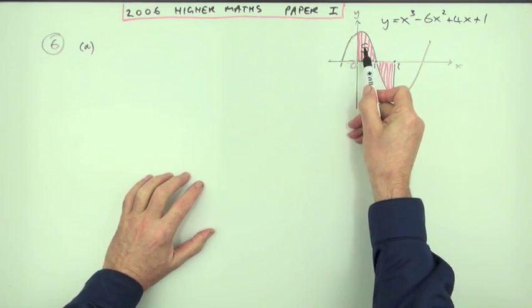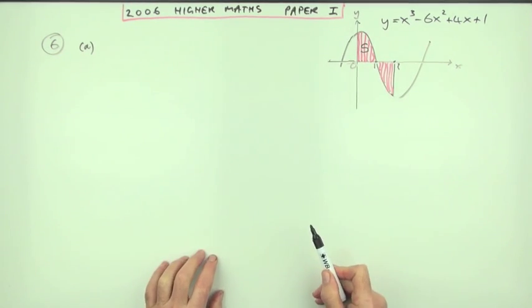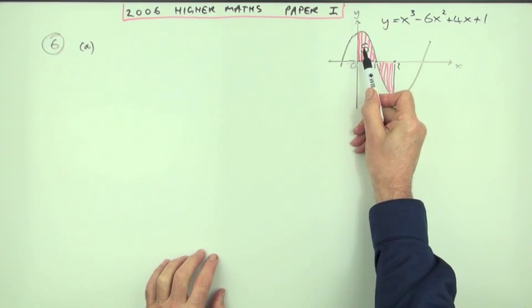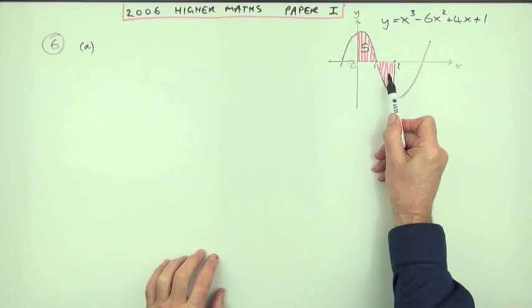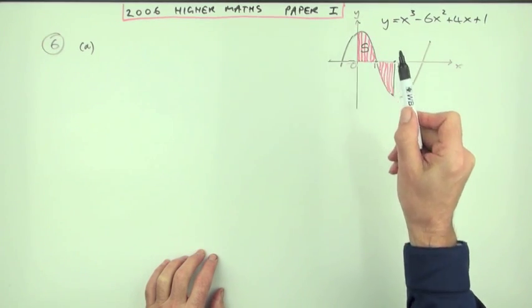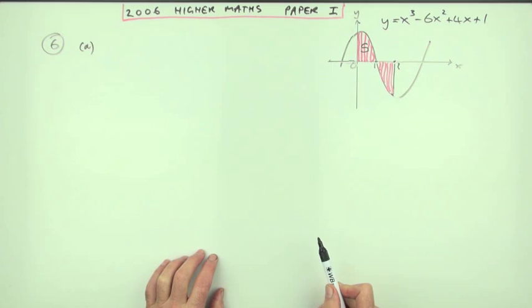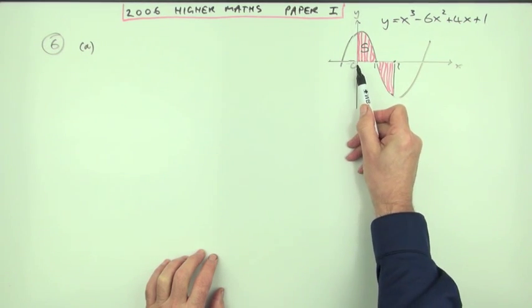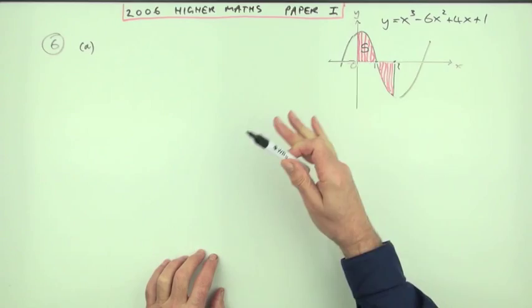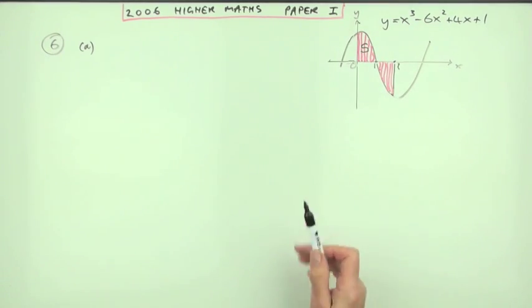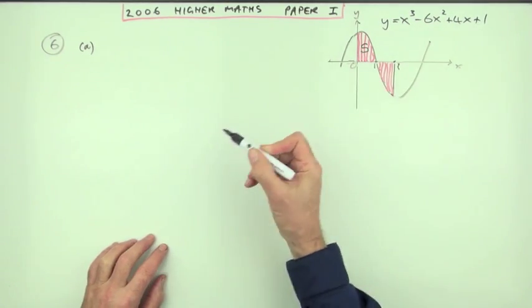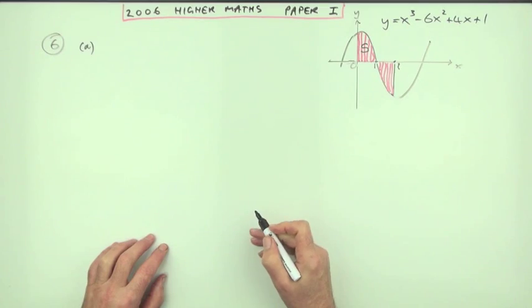One thing you should notice straight away is there's parts above and parts below. The parts above will be positive and the integrals worked out below will be negative. But the areas you're looking for are the visible positive amounts. So one thing's for certain, don't try and integrate all the way from zero to two or you'll get no marks. If that's all you do for the whole question, you'd get no marks. But it splits up maybe for that reason.